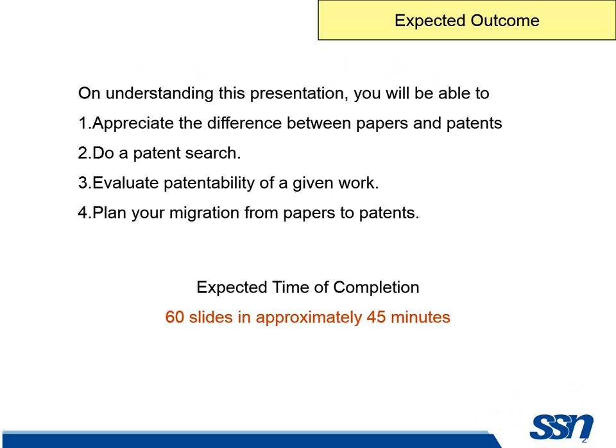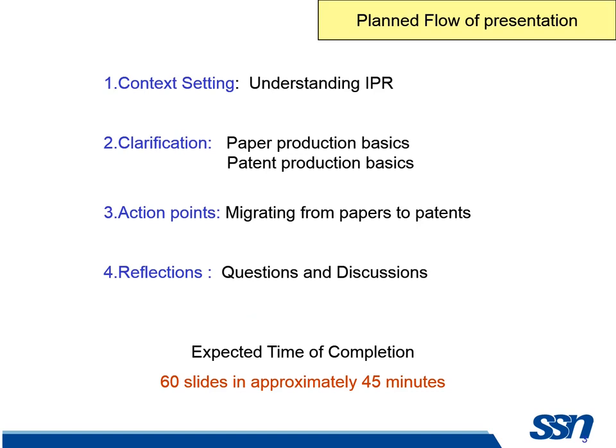The expected outcome: on understanding this presentation, you'll be able to appreciate the difference between papers and patents, how to do a patent search, how to evaluate whether your work is patentable or not, and then you can also plan your migration from papers to patents. The planned flow covers: types of intellectual property rights, the difference between how a paper and a patent are produced, how to plan our actions for this migration, and then questions and answers.